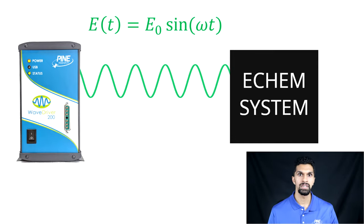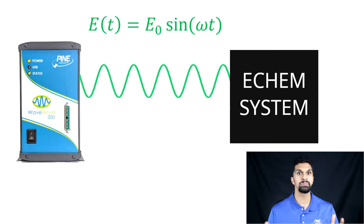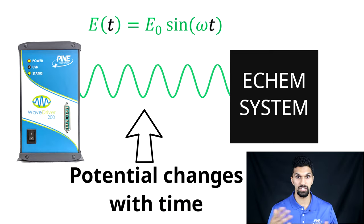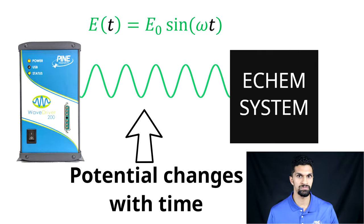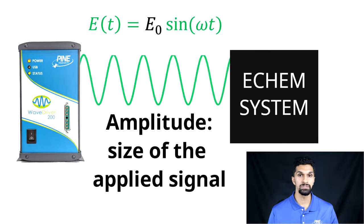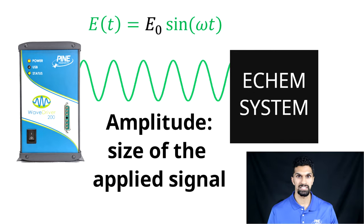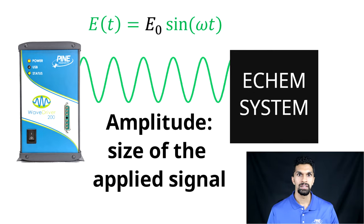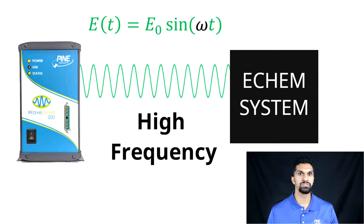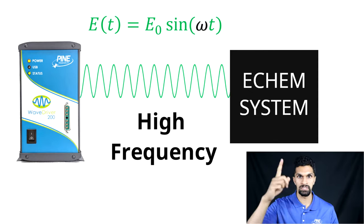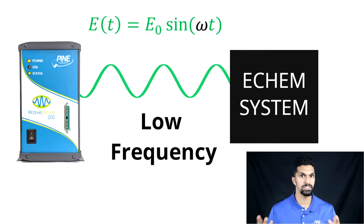First, it's time-dependent, so its potential will fluctuate as a function of time. It has an amplitude, which represents how large a potential we're applying, and it has an angular frequency, which is a measure of how often the signal is oscillating.